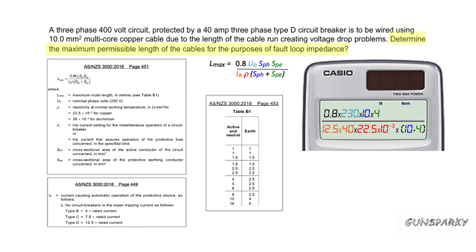Determine the maximum permissible length of cables for the purpose of fault loop impedance. And the answer is 46.8 metres.